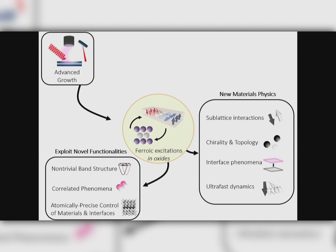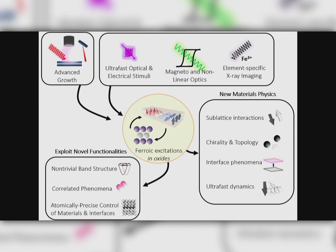The key to all this is really the ability to grow materials with atomic precision, combined with what I'll show you today: some in-situ characterization, mainly electronic characterization and some imaging. So if you get nothing from today's talk, just take away how the power of both growing atomically precise systems combined with in-situ characterization in oxides can lead to some pretty fun things.